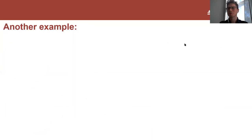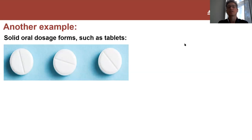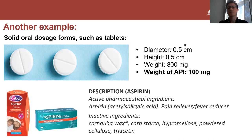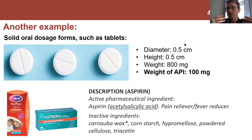Let's talk about something more relevant to chemical engineering: solid oral dosage forms such as tablets. These are particles too. We can describe properties like diameter, height, weight - but more intuitively, what's most important for a tablet is the actual weight of the active pharmaceutical ingredient, the API. This is the medication, what's supposed to make you feel better, and that's what you'll find on the labels. If you look at your home pharmacy - the example I chose here is aspirin - you'll see the active pharmaceutical ingredient, in this case acetyl salicylic acid, but also many other components called inactive ingredients. A tablet is actually much more of a high-tech project than you would imagine.